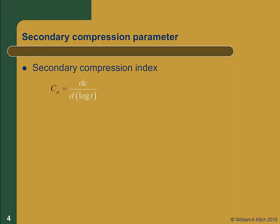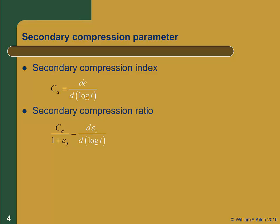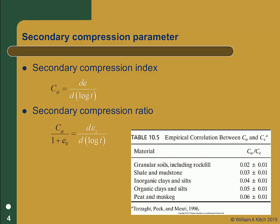The parameter we use to characterize the amount of secondary compression a soil will experience is called the secondary compression index, C sub alpha. C sub alpha is defined as the change in void ratio versus the change in log of time. There is also a strain formulation, called the secondary compression ratio, equal to C sub alpha over 1 plus E naught, or the change in vertical strain versus the change in log of time. There's good empirical evidence that C sub alpha is related to C sub C. Research has shown that the ratio of C sub alpha over C sub C is constant for a given soil. Table 10.5 provides some guidance on estimating C sub alpha given C sub C. We can also measure C sub alpha during a consolidation test.